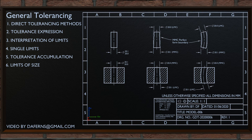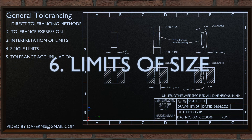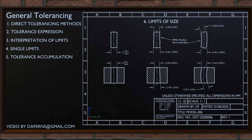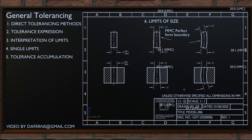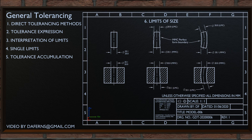This video is a continuation of the geometric dimensioning and tolerancing series. Here we are going to discuss how to interpret the limits of sizes. Note that terms MMC and LMC are used in this video. If you want to know more about MMC and LMC, then don't forget to check out the video on the application of maximum material condition.